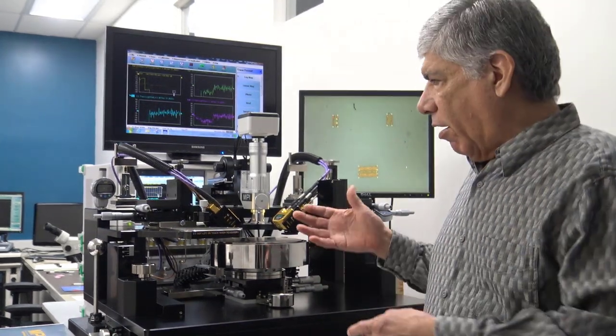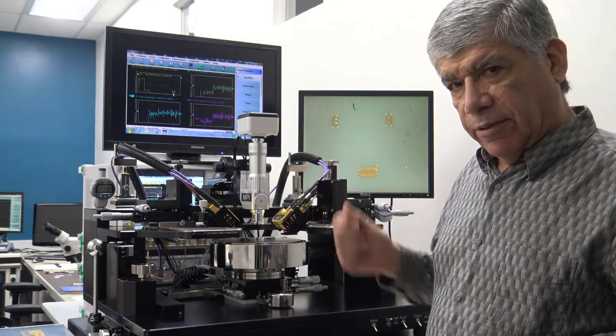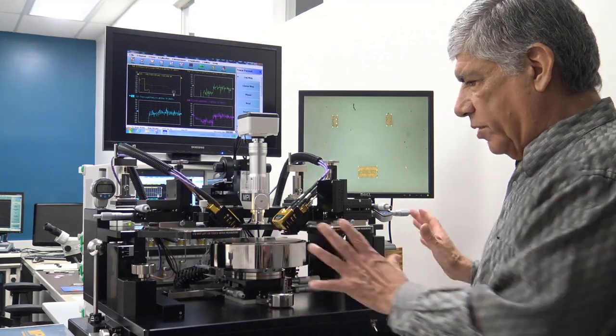What we're going to show here is the way that we would typically mount our 220 gigahertz system, broadband system ME7838G, onto a probe station.